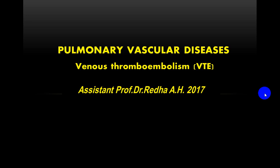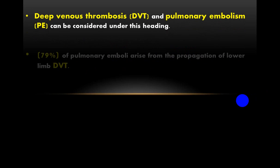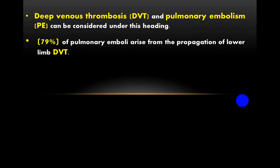Today's topic is pulmonary vascular diseases, specifically venous thromboembolism (VTE). Deep venous thrombosis (DVT) and pulmonary embolism (PE) can be considered under this heading. About 80% of pulmonary embolism arises from propagation of lower limb DVT, making deep venous thrombosis of the lower limbs the main cause of pulmonary embolization.